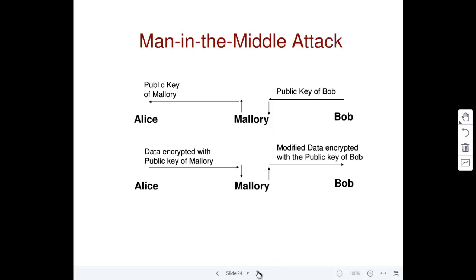The reason this attack can happen is that Alice is made to believe that what she receives is Bob's public key simply because she thinks it is coming from Bob. There is no way for Alice to really authenticate that what she gets is actually Bob's public key. That is the core problem here.